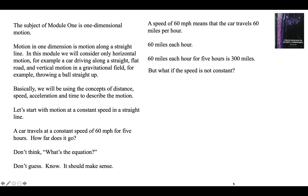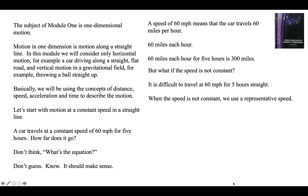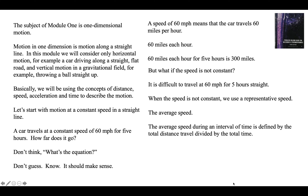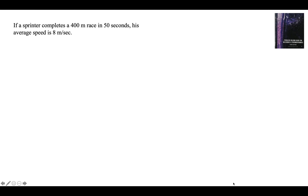What if the speed is not constant? It's difficult to travel 60 miles an hour for five hours straight — you have to stop for gas or charging, you got to pee, maybe get hungry. When the speed is not constant, we use a representative speed, which is the average speed. The average speed during any time interval is the total distance traveled divided by the total time. And you knew this already before you came to this class. So if a sprinter goes 400 meters in 50 seconds, his average speed is 8 meters every second.